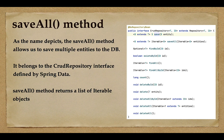Welcome back. In this lecture, we'll see how to use the saveAll() method to save multiple entities into a database table. The saveAll() method is from the CrudRepository interface and it returns a list of iterable objects. Whenever you have a requirement to save multiple entities into a database, you can go ahead and use the saveAll() method.